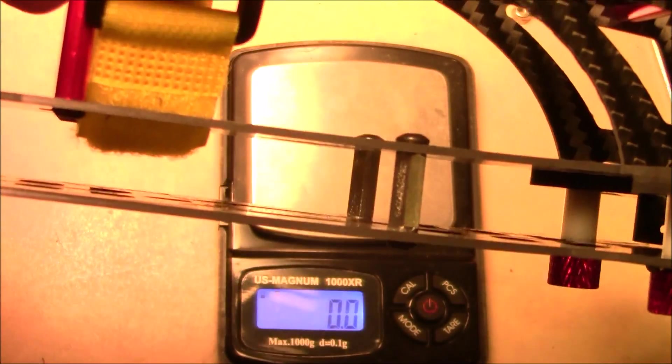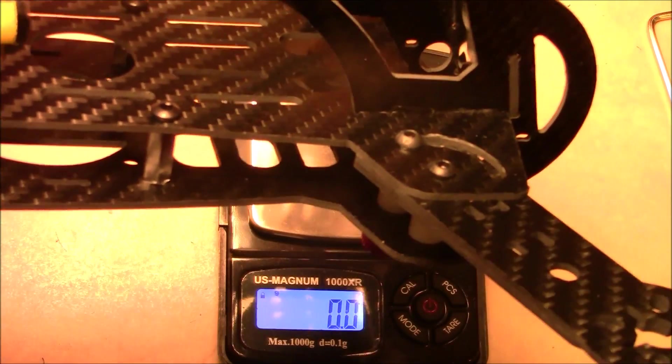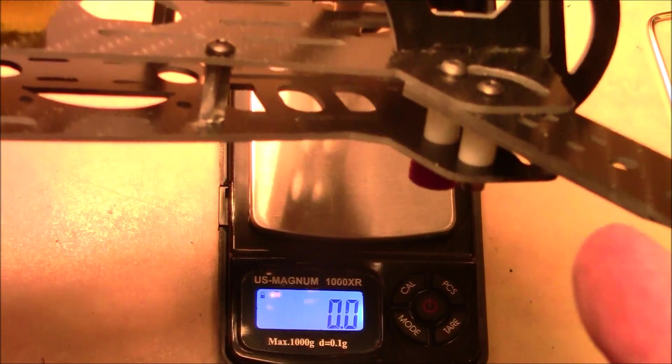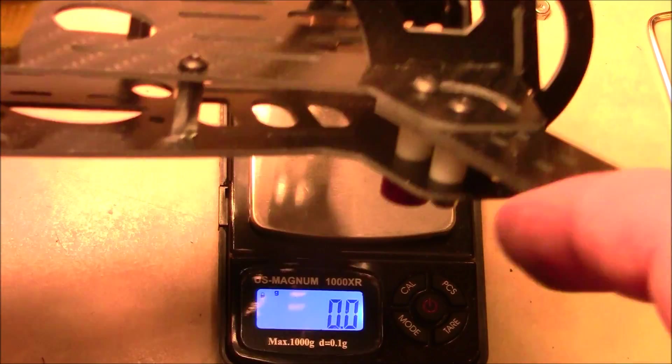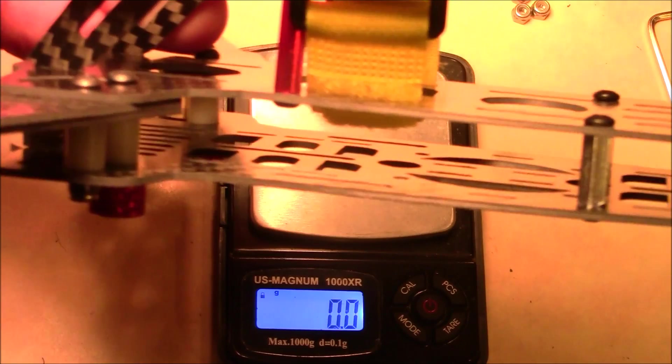So pointing out the front you'd have plenty of room inside here for your motor wires and for your ESCs to sit inside there too. So you wouldn't have to have your motor wires or your ESCs out on your arms if you didn't want to. You can put them underneath there. That's plenty of room.